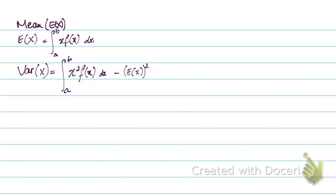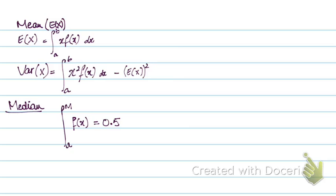To find the median, you integrate the function from a — the lower limit — to m, where m is the median. The answer for this integral will be 0.5, because the median is the midpoint of the distribution where the probability on either side is 0.5. Equivalently, you can integrate from m to b and set the result equal to 0.5.